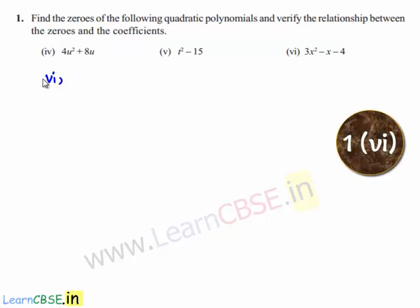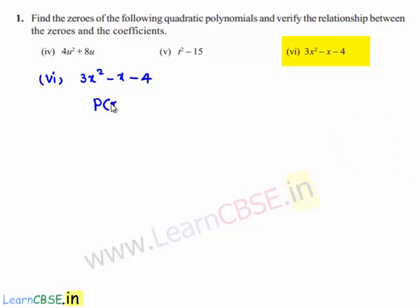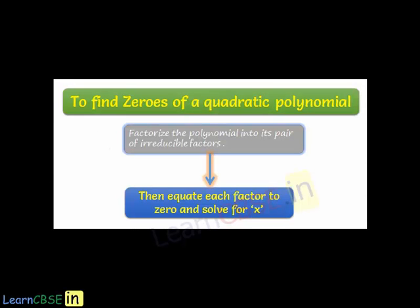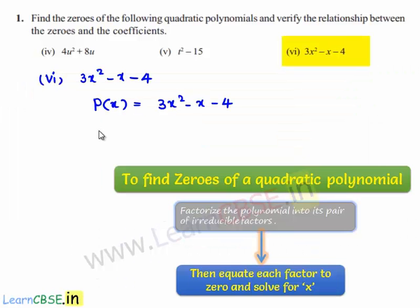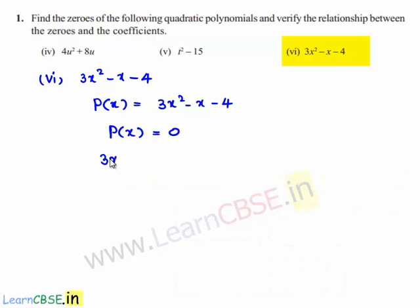Coming to the sixth bit, which is 3x squared minus x minus 4. Let us write the polynomial P of x is equal to 3x squared minus x minus 4. In order to find the zeros of the polynomial, let us equate the given polynomial to 0, that is 3x squared minus x minus 4 is equal to 0. Let us factorize the given polynomial.